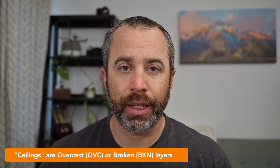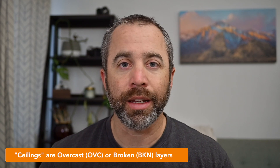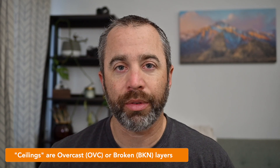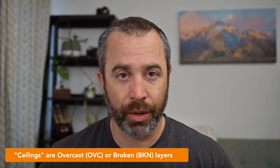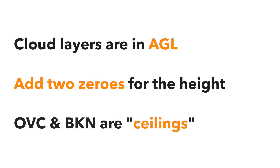When we're talking about a ceiling, we're talking about a layer of clouds so thick you may not be able to get through it without losing sight of the ground. That is either an overcast layer, which is completely solid, or a broken layer — BKN — where there might be some small gaps but there's still enough to consider it a ceiling. Recapping: cloud heights are given in AGL altitudes, you add two zeros to get how high above the ground it is, and a ceiling is either an overcast or broken layer.